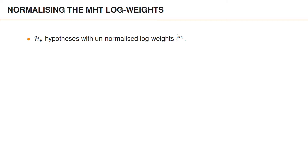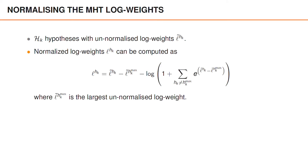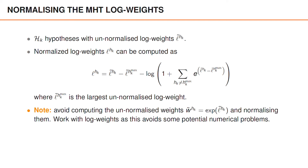We also need the normalized posterior log weights. One way to do this normalization without computing the actual weights is given here. This builds upon a summation subtraction rule that is really useful when dealing with log probabilities and needing to compute a sum. As mentioned earlier, the reason for working with log weights is that it avoids numerical problems. As a general rule of thumb, it is a good idea in object tracking to avoid computing probabilities and predicted likelihoods directly — it is often better to compute the log probability and log likelihood.